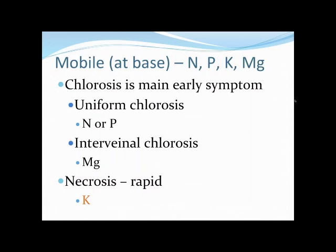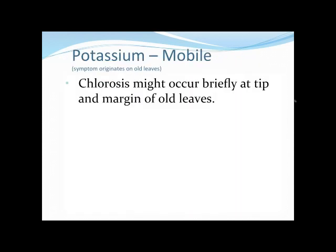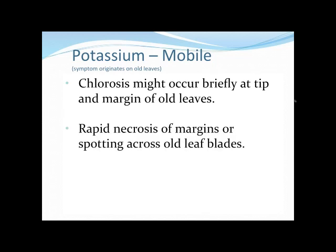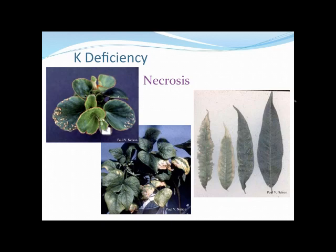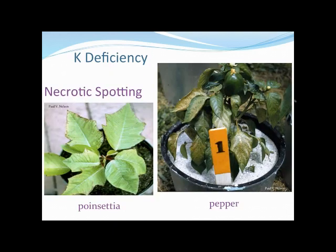With our final mobile element — potassium — if the first symptom we see is some type of necrosis on the lower parts of the leaves, it's probably potassium. You might see some chlorosis at the tip or margins first, but it's going to happen very quickly and rapidly turn to necrosis. On this wax begonia, you can see a little chlorosis on margins but it went to a fast necrosis on the edges. And on these poinsettias, that marginal necrosis is really coming in and sticking to the margin.